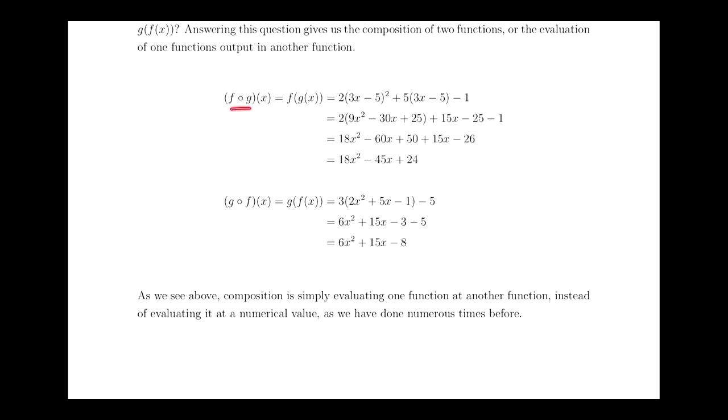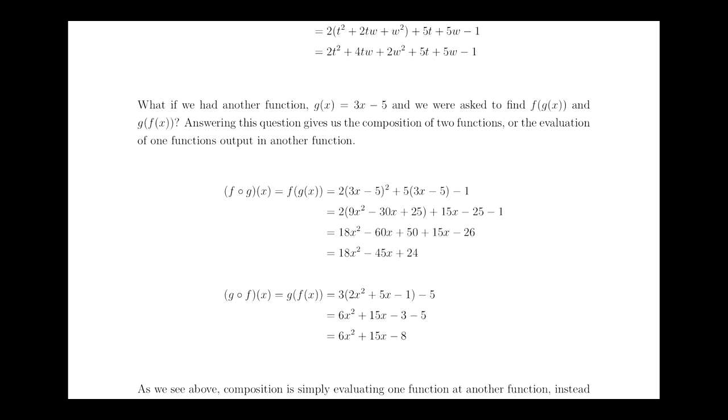So f composed of g of x means I have to symbolically take g of x, whatever that function is, and wherever I see an x in the f function, I have to replace it. So my original function for f was 2x squared plus 5x minus 1. So wherever I see an x, there, there, and there, I'm going to replace it with g of x.